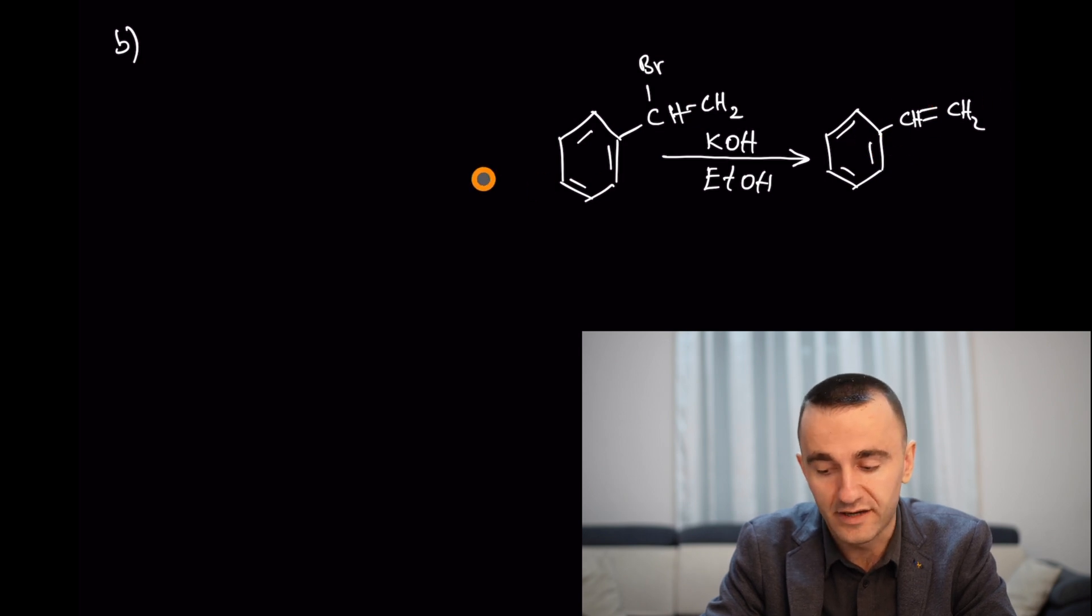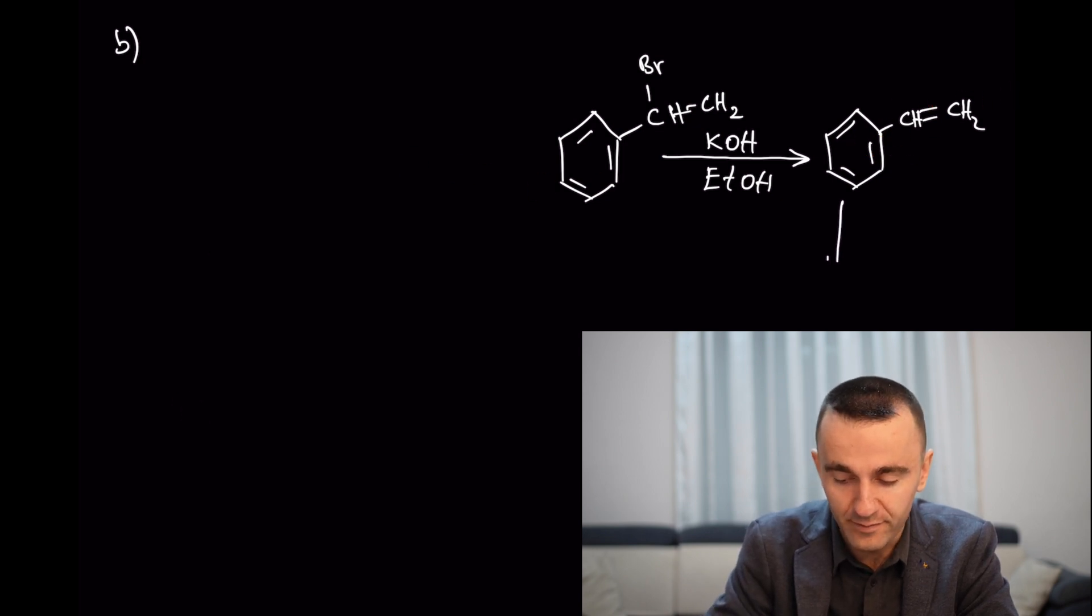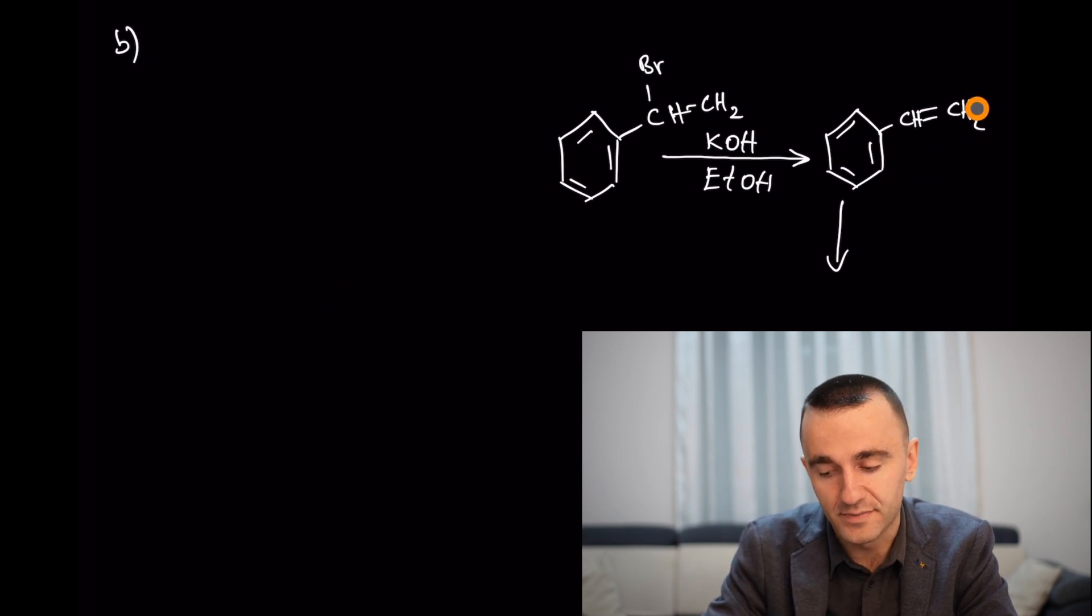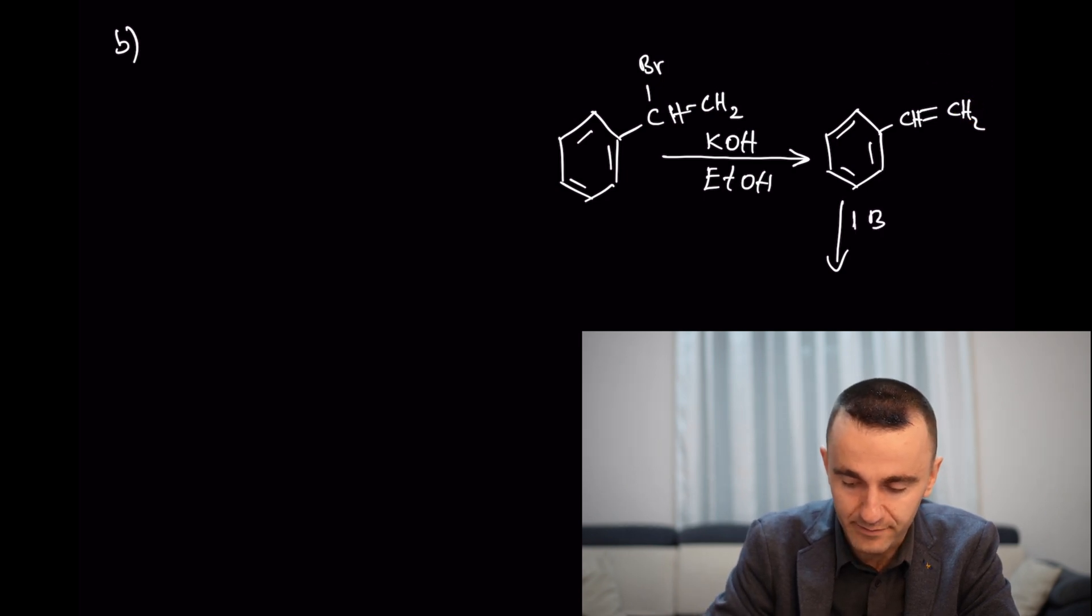For example, if you want to convert this to an alcohol at this position, you need an alcohol here. If you want it here, you're going to use anti-Markovnikov rule with boron hydride. First step: BH3 in THF. Second step: hydrogen peroxide in basic condition.